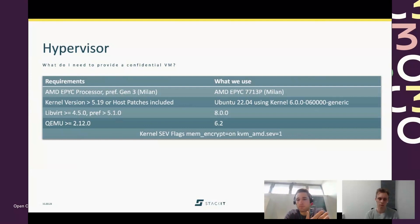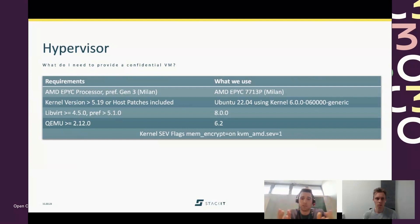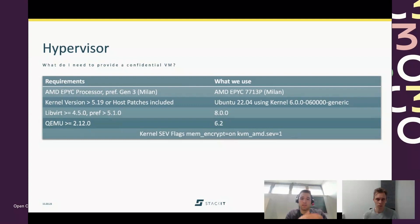We use QEMU version 6.2, which handles emulation and virtualization and needs a specific version — though 2.12 is the minimum, which is quite old. Within the operating system, we need to enable certain kernel flags: specifically memencrypt=on and kvm_amd.sev=1. With this setup fulfilled, we have a Linux host that can provide the AMD SEV features we need, but there's more to it.